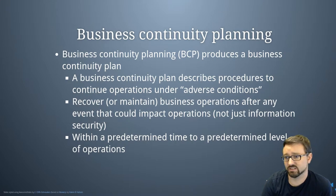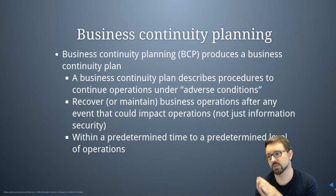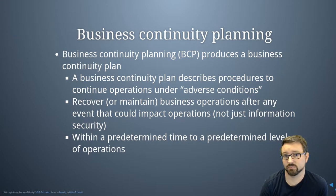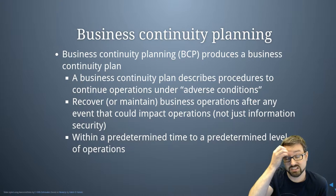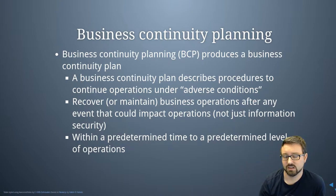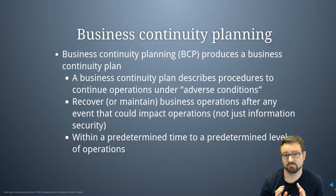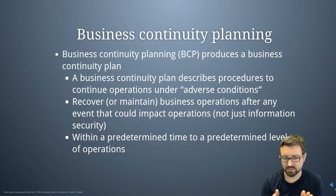Business continuity planning produces a business continuity plan, which should describe the procedures used to continue operations under adverse conditions. You build this plan with procedures to follow, and the aim is to recover or maintain business operations after an event that could impact them. It's not just about cybersecurity — it's about anything that could go wrong. Part of the planning involves having predetermined aims for what's important and what level of operations you aim to restore within what time constraints.